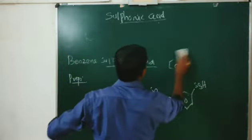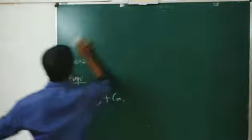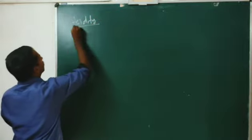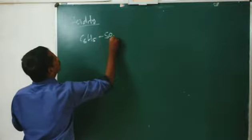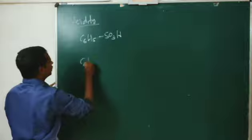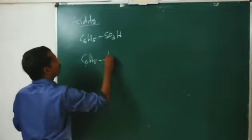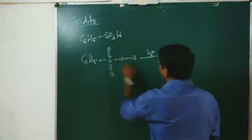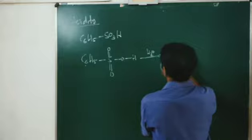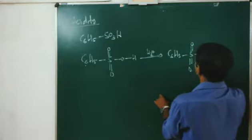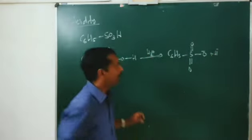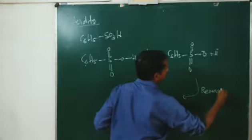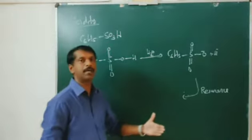Next is acidity of benzene sulphonic acid. When benzene sulphonic acid, C6H5SO3H, with actual structure C6H5 with double bond O, double bond O, O, H, is placed in water, you get a sulphonate ion — C6H5S with double bond O, double bond O, O minus — and H plus. This sulphonate ion can be stabilized by resonance.